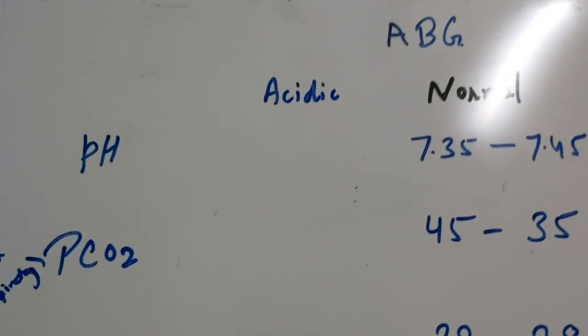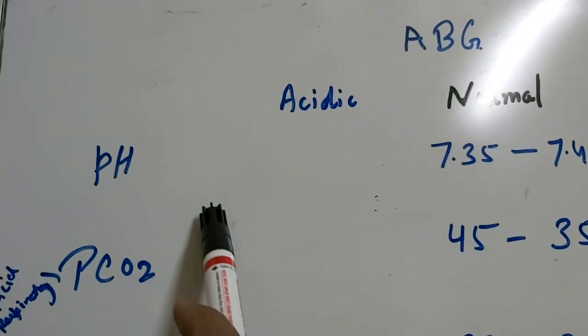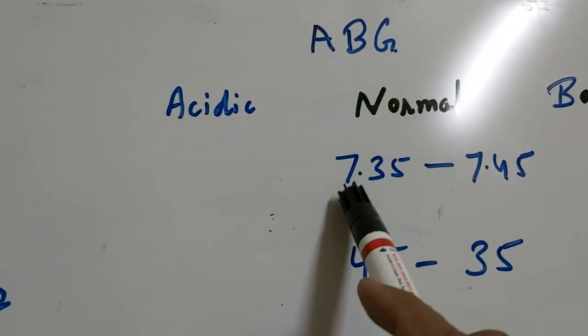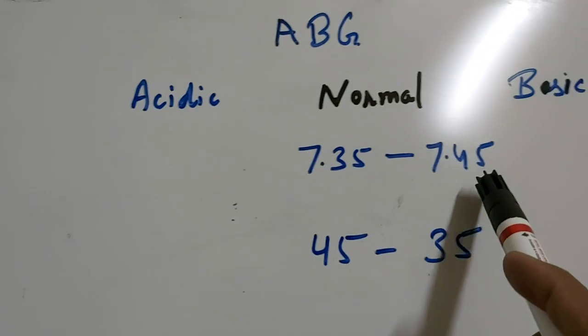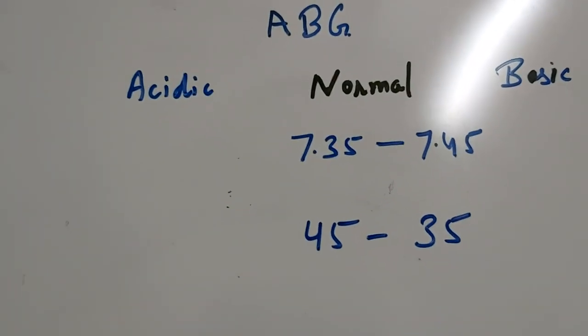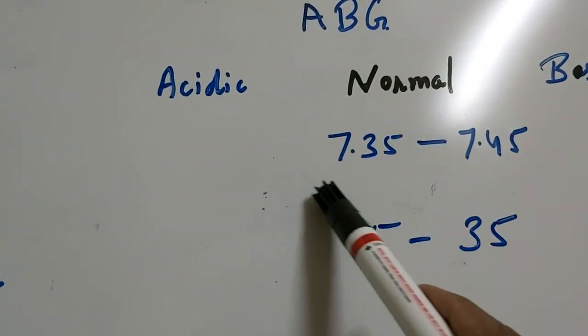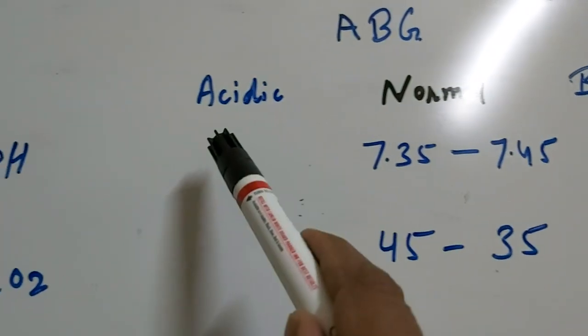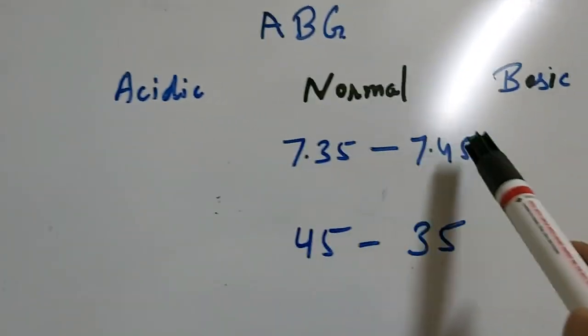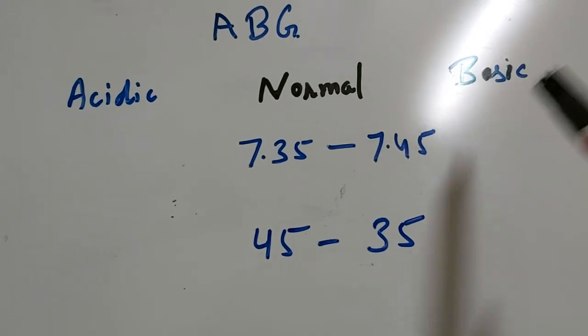In ABG, if we see the first thing, that is the pH, the normal pH of the blood is in the range of 7.35 to 7.45. If it is below this value, then it is acidic, and if it is greater than this, then it is basic.